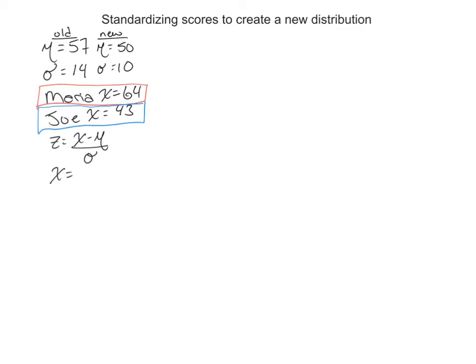So in this example, we're going to say that Professor X wants to take the old scores. He took a quiz and the old scores had an average of 57 with a standard deviation of 14. And he says those numbers are kind of crazy and different. We're going to standardize them. So he's going to give new scores. The new standardized score, he says, I want the average to be around 50 and I want standard deviation to be a clean 10. So what we're going to do is we're going to look at two different people. We're going to look at Maria's score of 64 and Joe's score of 43. And we're going to say, what would their new scores be if he transforms these distributions of raw scores into a new standardized distribution?